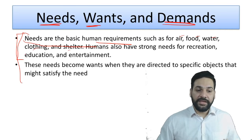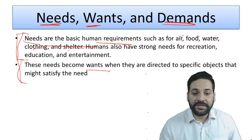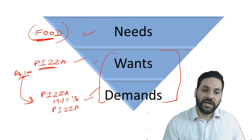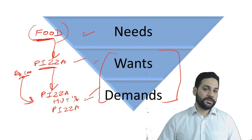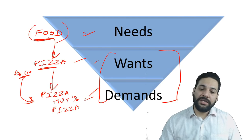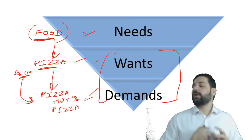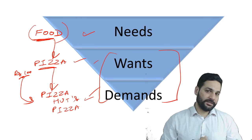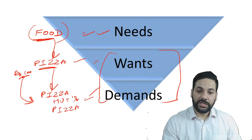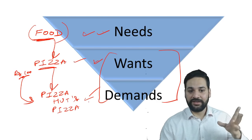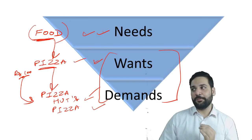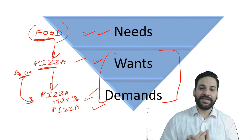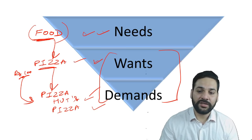When needs are directed towards a specific objective that might satisfy them, a need becomes a want, and a want becomes a demand. A demand is a strong, directed need. For example: you need food, you want pizza, and you specifically want Pizza Hut pizza — that is a directed demand. Most marketing campaigns are converting wants into demands or needs into wants.